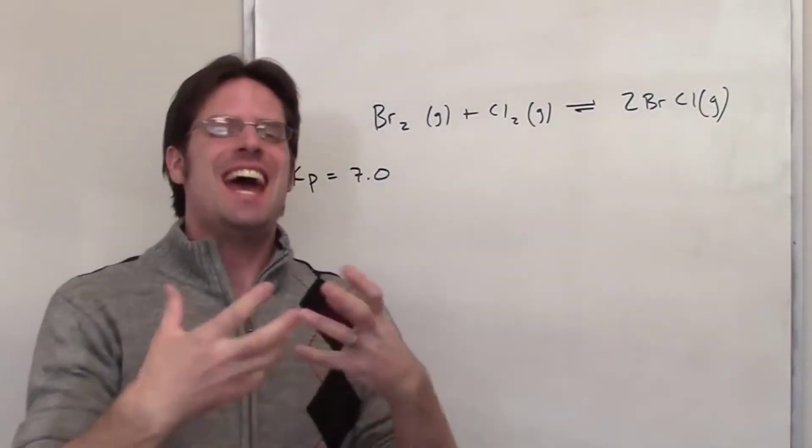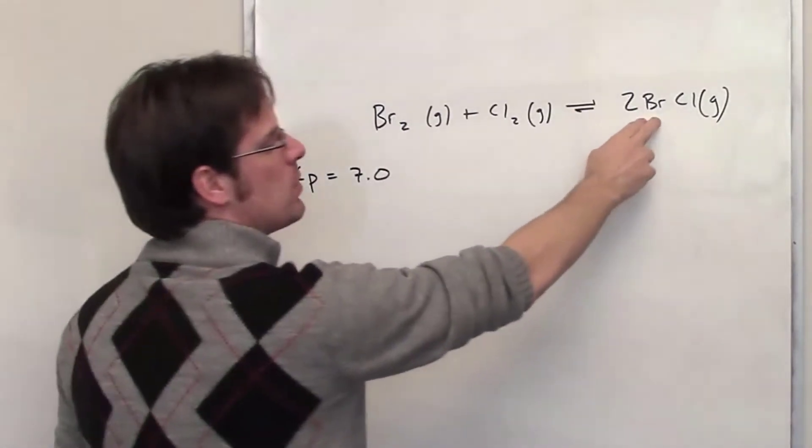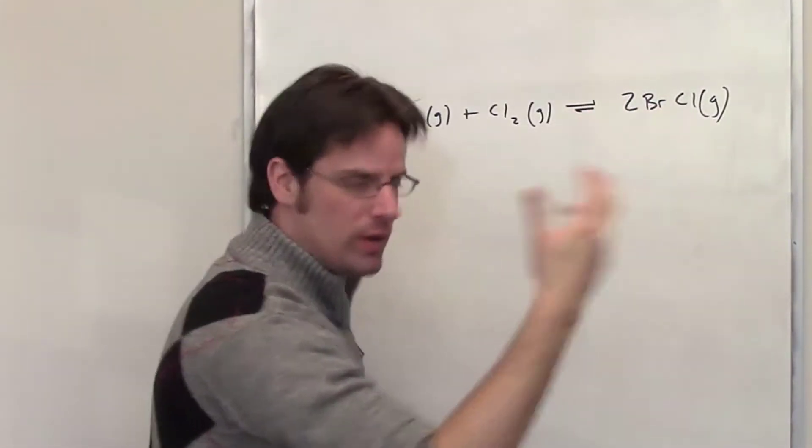Okay, in this question we're given an equilibrium reaction with bromine and chlorine gases in equilibrium with two molar equivalents of bromine chloride.